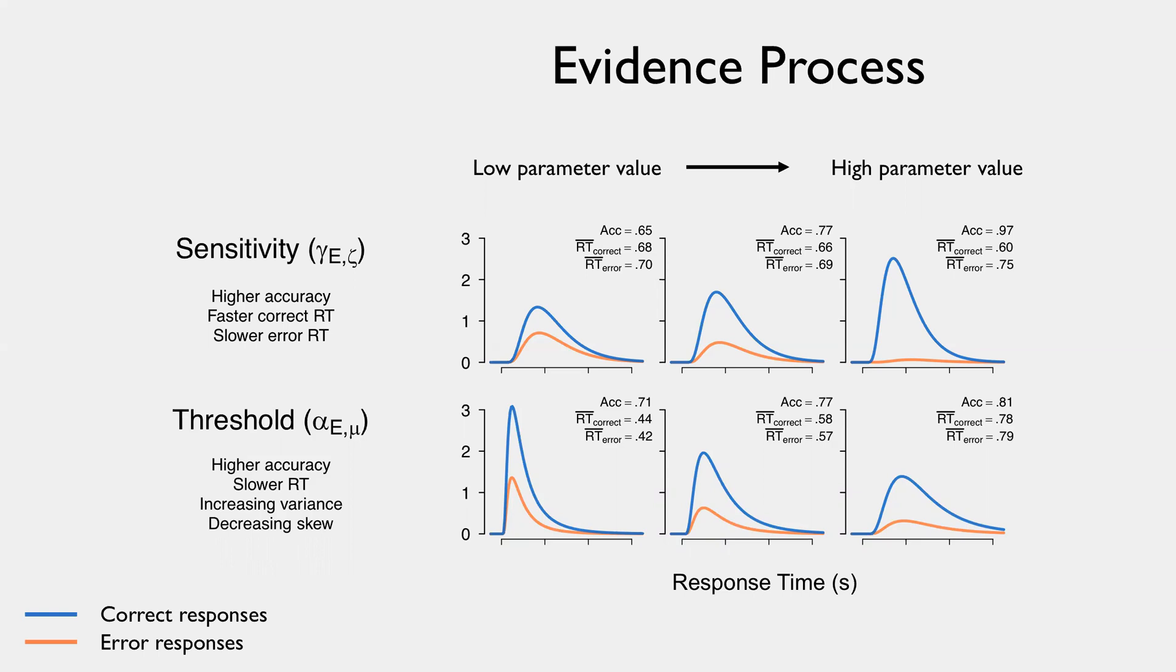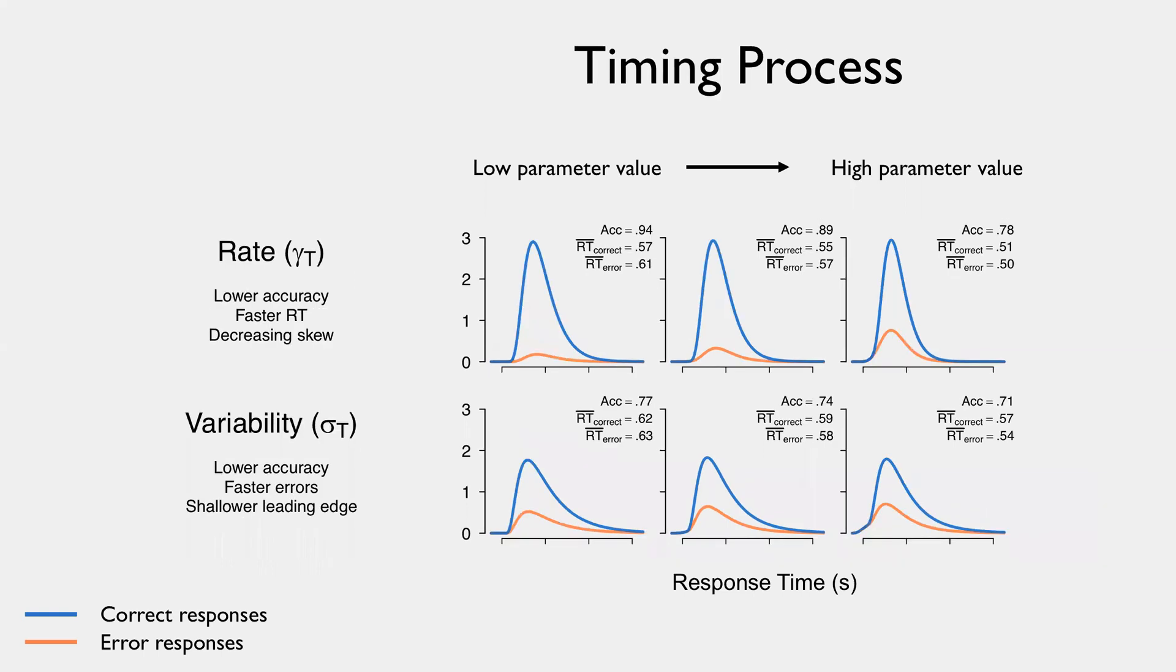your accuracy increases, and your mean RT goes up, and some changes in the variance of the distribution. So in the evidence process, this is exactly as we would expect.